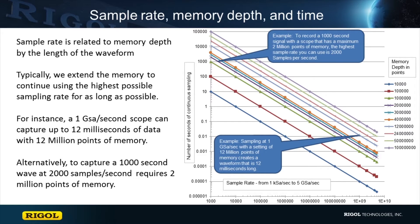Two good examples help us illustrate the relationship. To record a 1,000 second signal with a scope that has 2 megapoints of memory, the highest sample rate you can use is 2,000 samples per second. On the other hand, if you know you need 1 gigasample per second sampling and have a scope with up to 12 million points of memory, then the longest time you can continuously capture is 12 milliseconds.